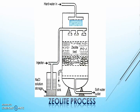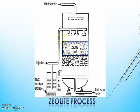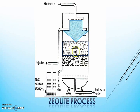For the softening process, hard water is percolated at a specified rate through a bed of zeolite. When water passes through this zeolite bed, hardness-causing ions like calcium or magnesium are retained by the zeolite as calcium zeolite or magnesium zeolite. Hence, the outgoing water is free from such salts — that means we get soft water.